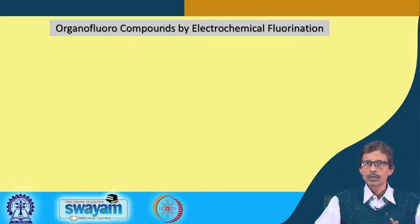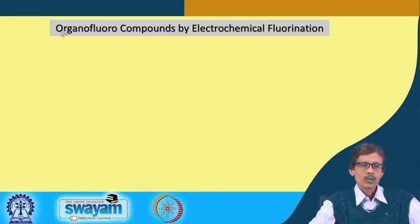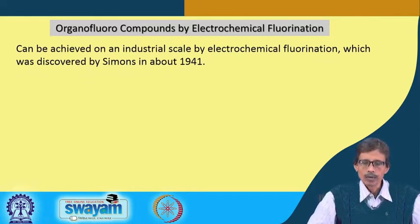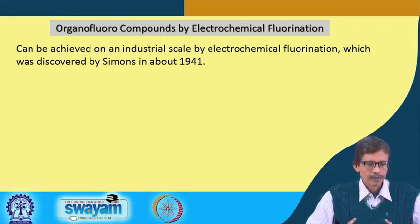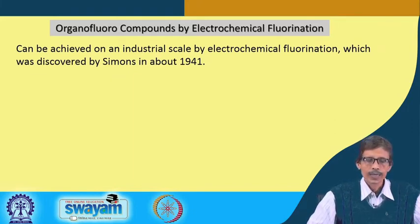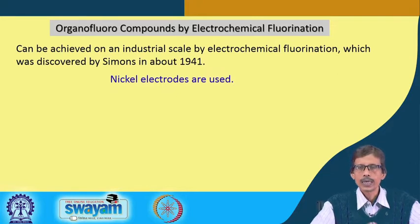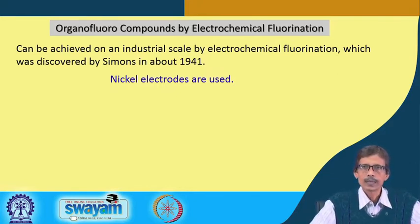You can take the help of electrolysis where the organic molecule will be fluorinated electrochemically. This industrial-scale electrochemical fluorination technique was first introduced by Simon et al. in 1941 and is still very popular for making useful organofluorine compounds. The process uses nickel electrodes — nickel is a transition metal and not very costly.